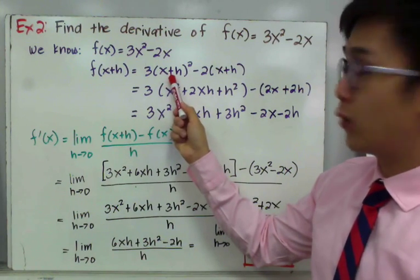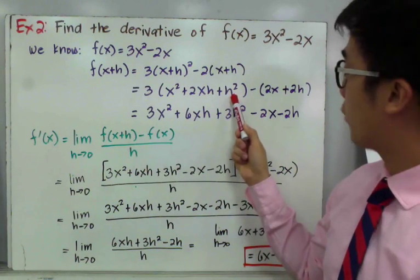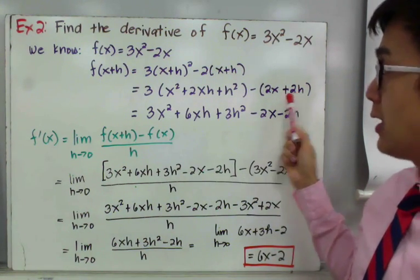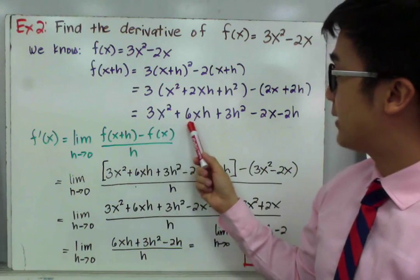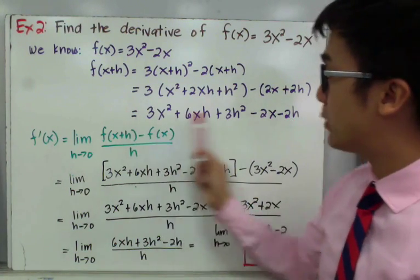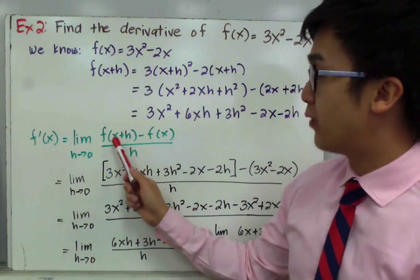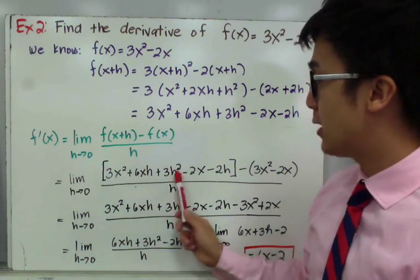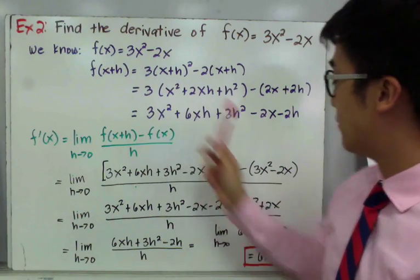By expanding the binomial, we expand x plus h squared as x squared plus 2xh plus h squared, then distribute 2 to x plus h to get 2x plus 2h. Further simplifying f of x plus h gives us 3x squared plus 6xh plus 3h squared minus 2x minus 2h. This is what we use in our formula. Substituting, the numerator becomes 3x squared plus 6xh plus 3h squared minus 2x minus 2h, minus the function f of x, which is 3x squared minus 2x.